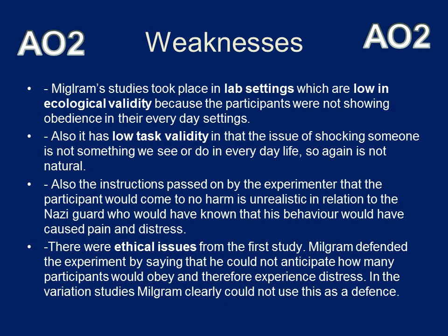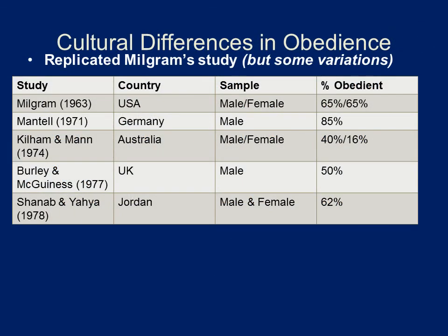The ethical issues from the original study still stand. There are also cultural differences in obedience: Milgram's study has been replicated by other psychologists in other countries. Australia shows the lowest levels of obedience, particularly in females. Germany still shows stronger obedience levels than Milgram's original study conducted in the USA.